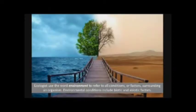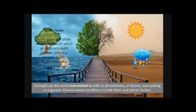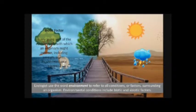Ecologists use the word environment to refer to all conditions or factors surrounding an organism. Environmental conditions include biotic and abiotic factors. Biotic factors are any living part of the environment with which an organism might interact, including animals, plants, mushrooms and bacteria.